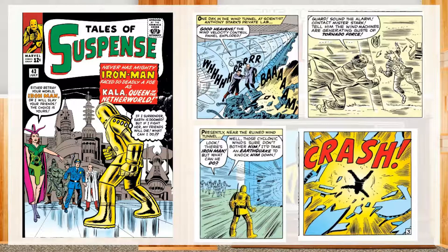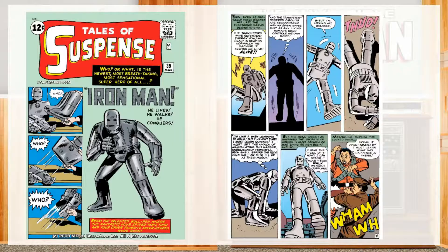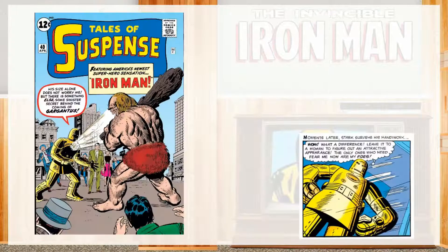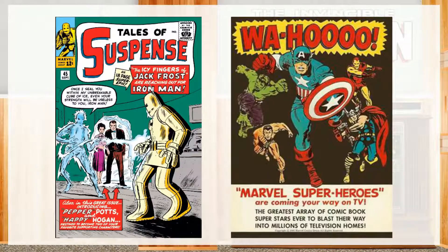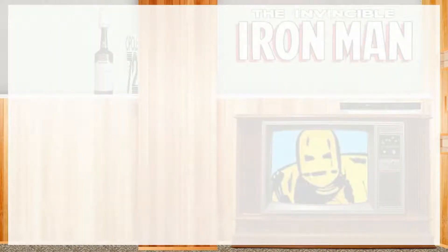Iron Man himself first debuted in Tales of Suspense number 39, and his golden iron suit made its debut in the very next issue, number 40 — because a lovely lady told him it would be cool if Iron Man looked like a knight in shining golden armor. Seeing as the show aired in 1966, that's just three years after these comics were released, which shows how quick and hard of a push they had to introduce these new characters into the mainstream.